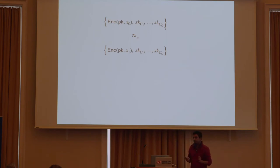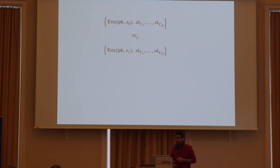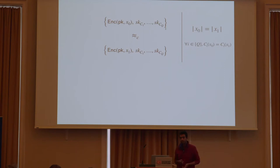As stated, this doesn't make sense because the adversary could query a circuit that outputs different values on both X0 and X1. So we need to impose an additional restriction that the output of all the circuits on message X0 should be the same as the output on message X1. Moreover, we also require that the length of X0 should be the same as the length of X1.